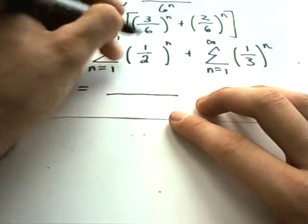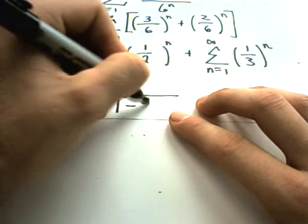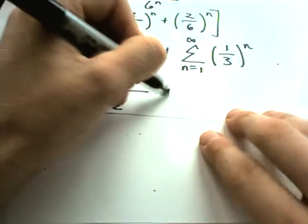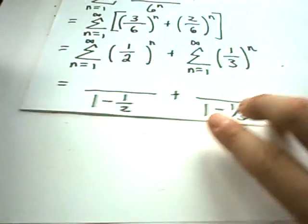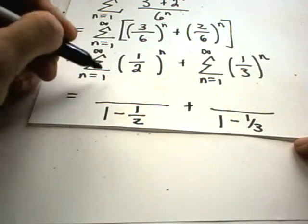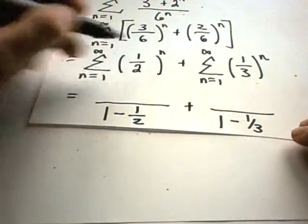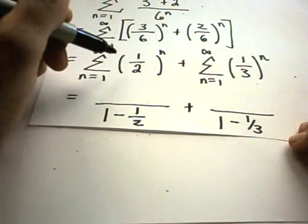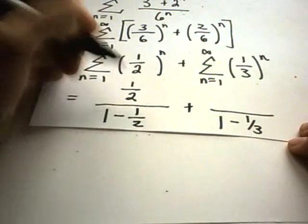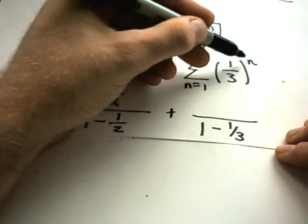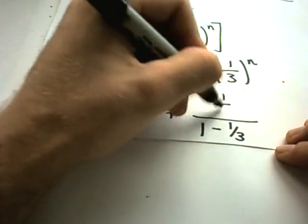For this part, my common ratio is 1 half, so I'll have 1 minus 1 half. For the other one, my common ratio is 1 third. To get my first term, I'll plug in n equals 1 into my formula. If I plug in n equals 1, I'll get 1 half on top. If I plug in n equals 1 on this one, I'll get 1 third on top.